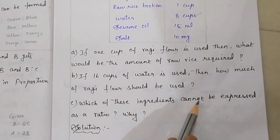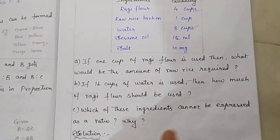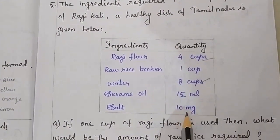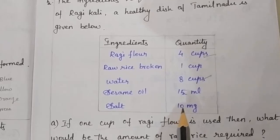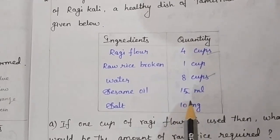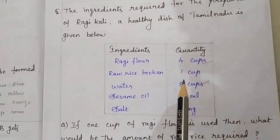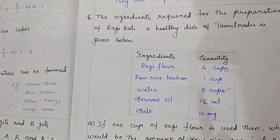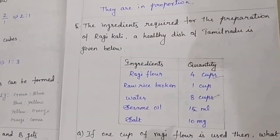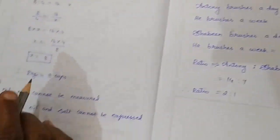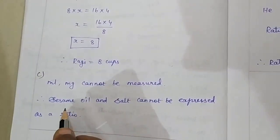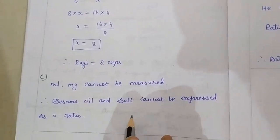Sub-question C: which of these ingredients cannot be expressed as a ratio? Among all the ingredients, oil and salt are given in ml (milliliter) and mg (milligram), whereas the other ingredients are given in cups. If we want to write as a ratio, all the units should be the same; otherwise we cannot write as a ratio. So therefore, sesame oil and salt cannot be expressed as a ratio.